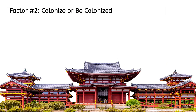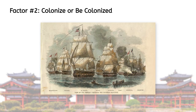Factor number 2 – Colonize or Be Colonized. In the 1830s and 1840s, Japan witnessed the British colonization of its neighbor, China. Then, in 1853, American Commodore Matthew Perry anchored a fleet of heavily armed ships off the coast of Japan to convince Japan to end its policy of isolationism and open itself up to trade with Western nations. Afraid of what might happen if they refused, Japan agreed. However, many in Japan realized that it needed to industrialize both for its own economic benefit and for its own defense.